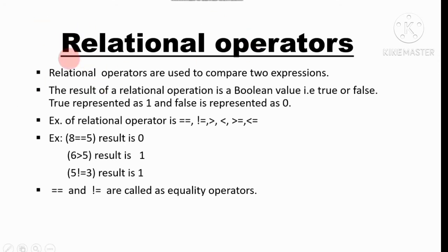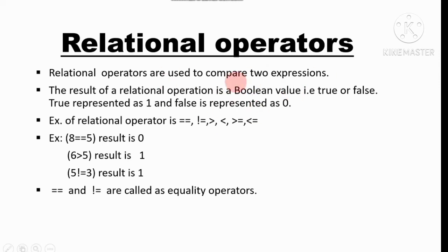So let's start with relational operators. Relational operators are used to compare two expressions. The result of a relational operation is a boolean value — boolean means the result should be true or false. True is represented as one and false is represented as zero. The result of a relational operator is always a boolean value.